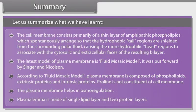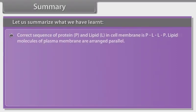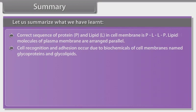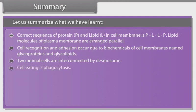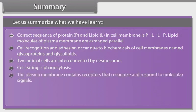The plasmalemma is made of a single lipid layer and two protein layers. The correct sequence of protein (P) and lipid (L) in the cell membrane is PLLP. Lipid molecules of plasma membrane are arranged parallel. Cell recognition and adhesion occur due to glycoproteins and glycolipids. Two animal cells are interconnected by desmosomes. Cell eating is phagocytosis. The plasma membrane contains receptors that recognize and respond to molecular signals.